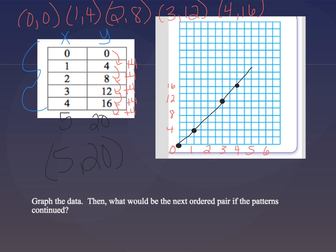Let's plot that and see if it makes sense. 5 and 20 would be right about here. Yeah, that makes sense according to our pattern.